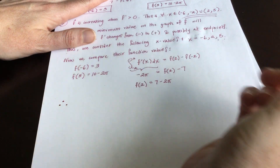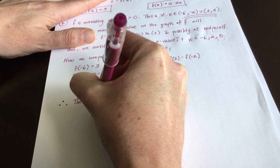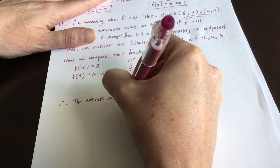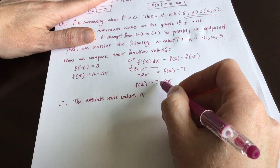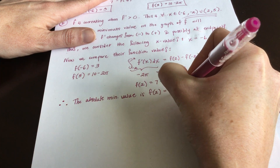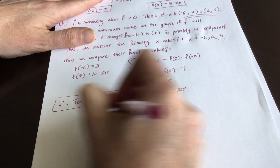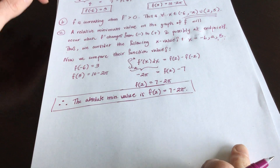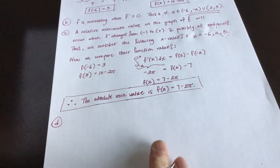Therefore, the absolute minimum value is f of two, which equals seven minus two pi. If you want to be thorough, you can write both f of two and seven minus two pi in your answer.